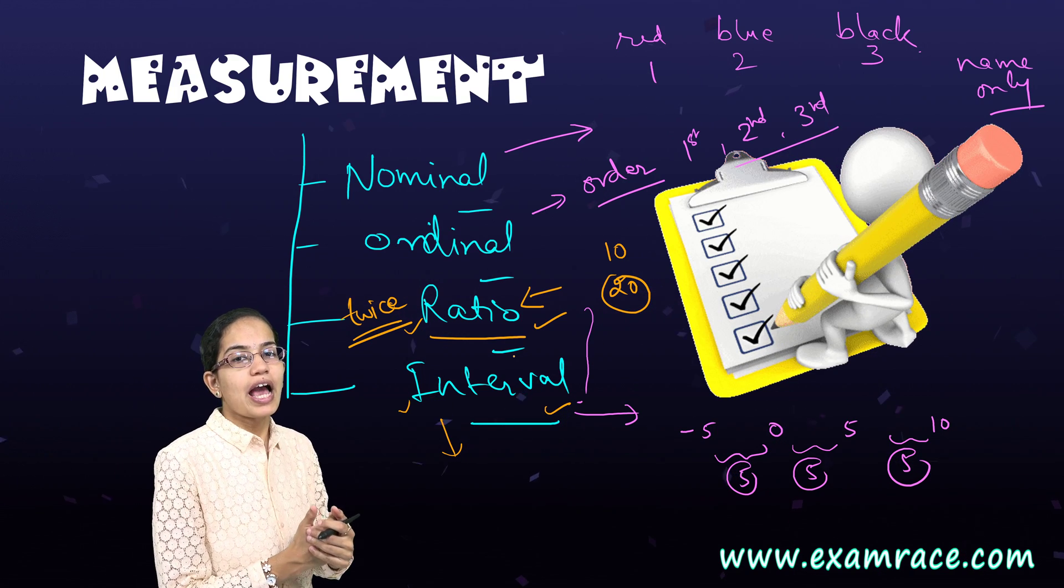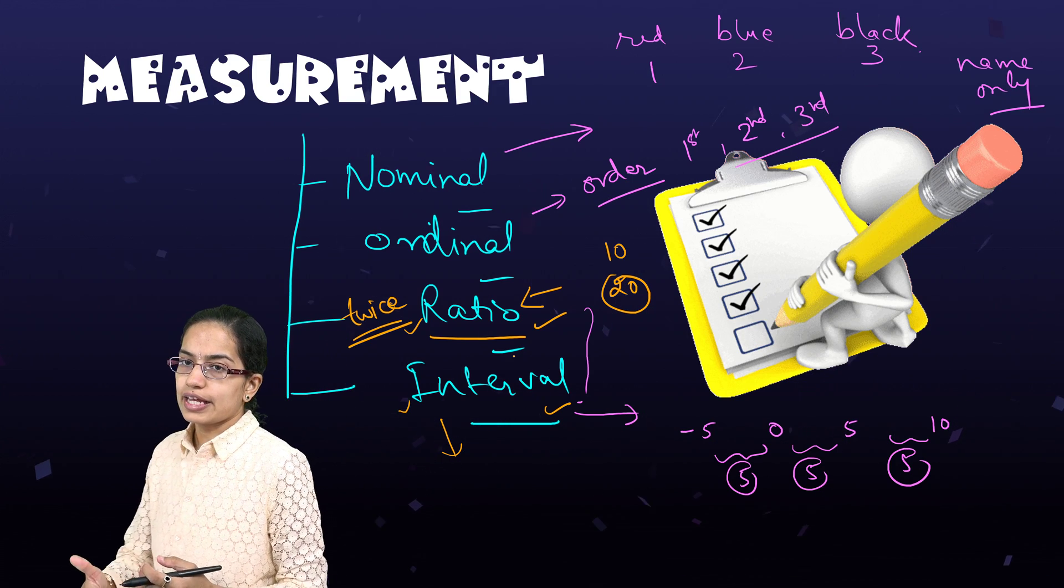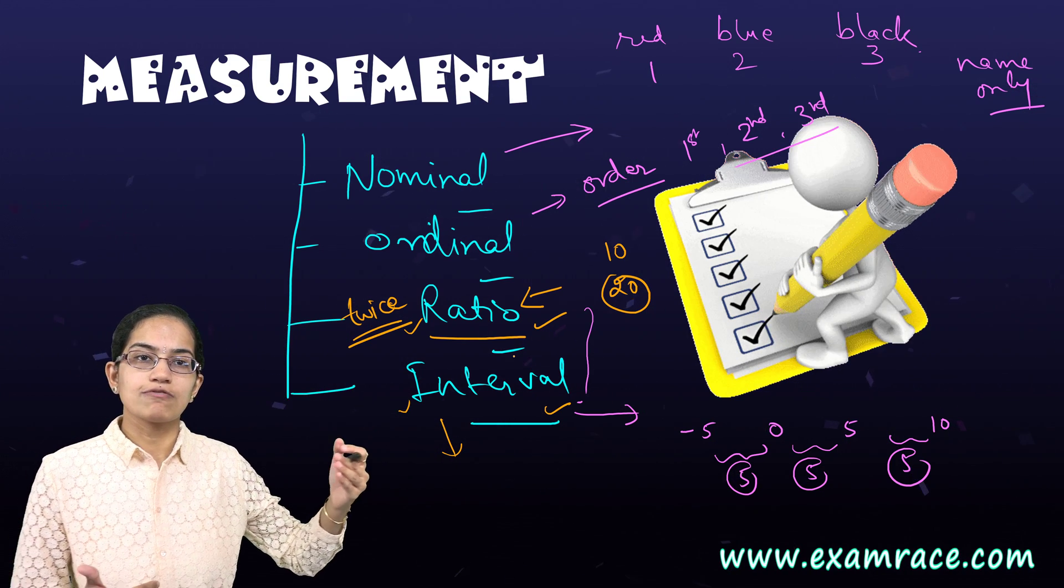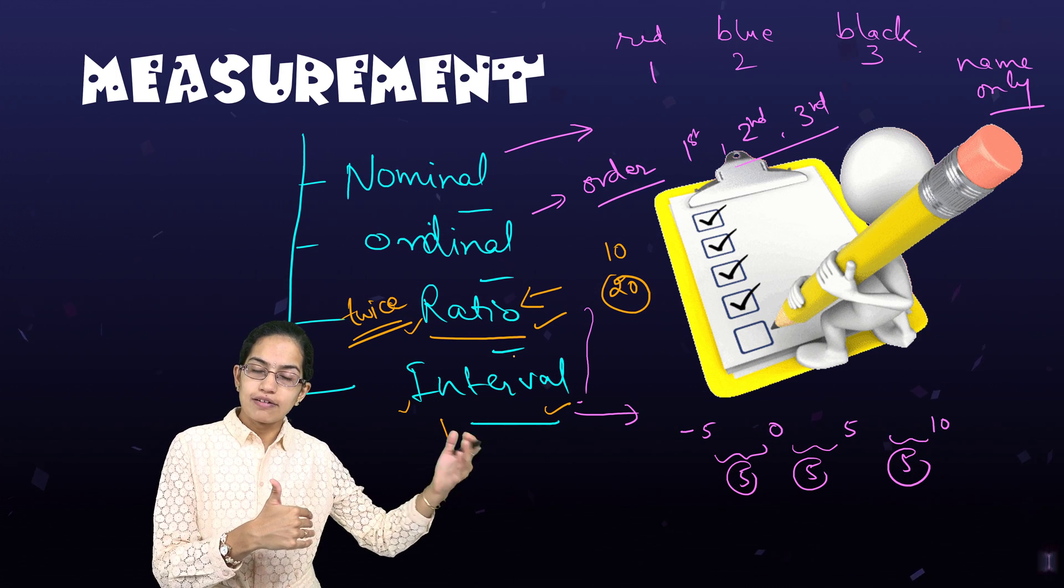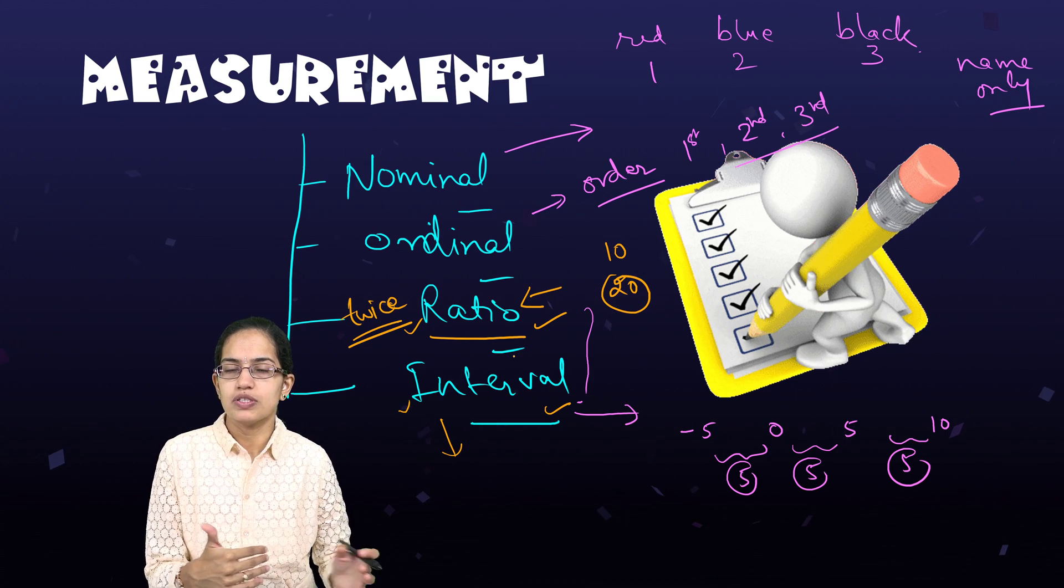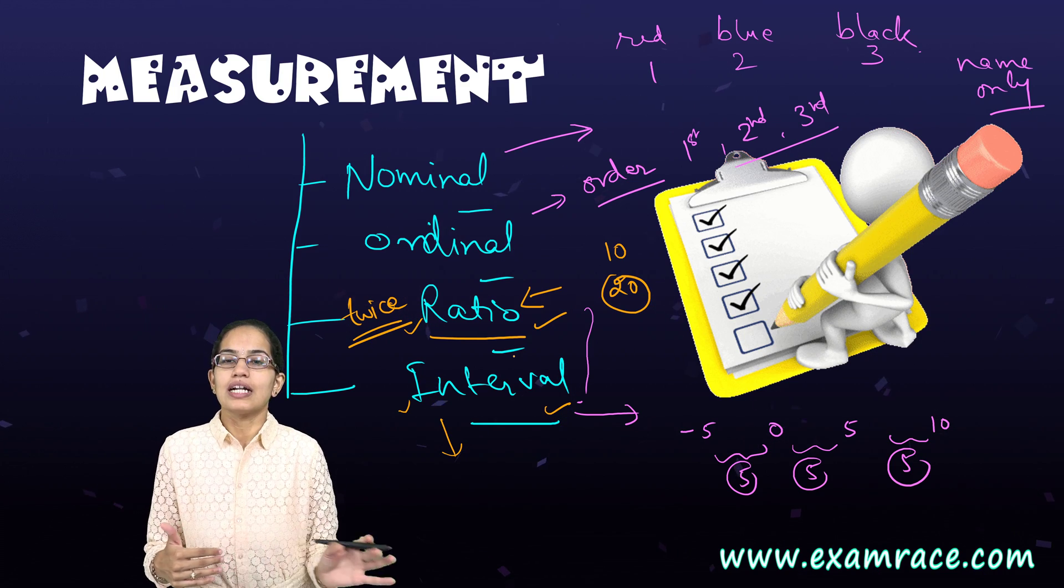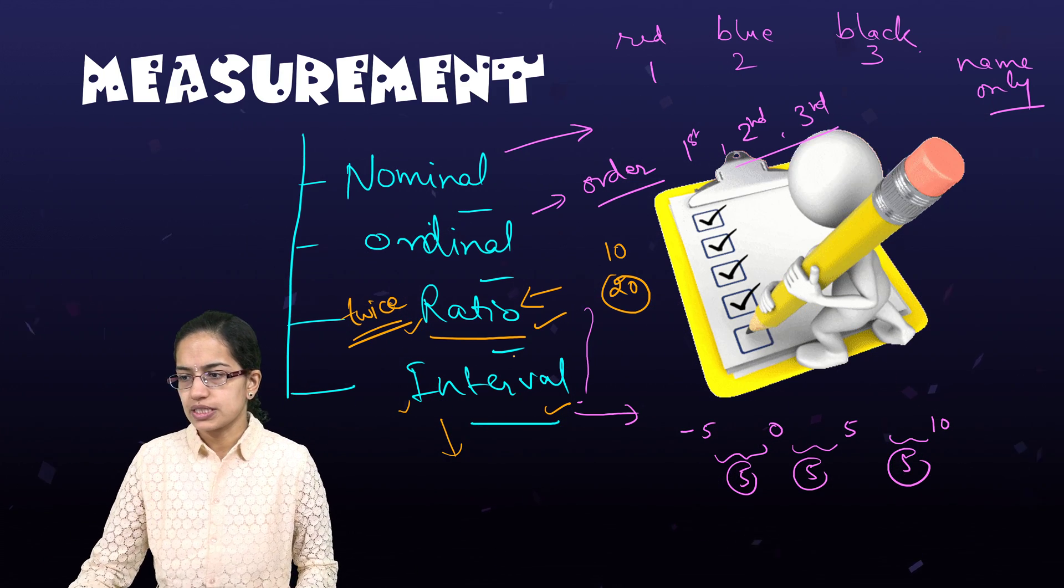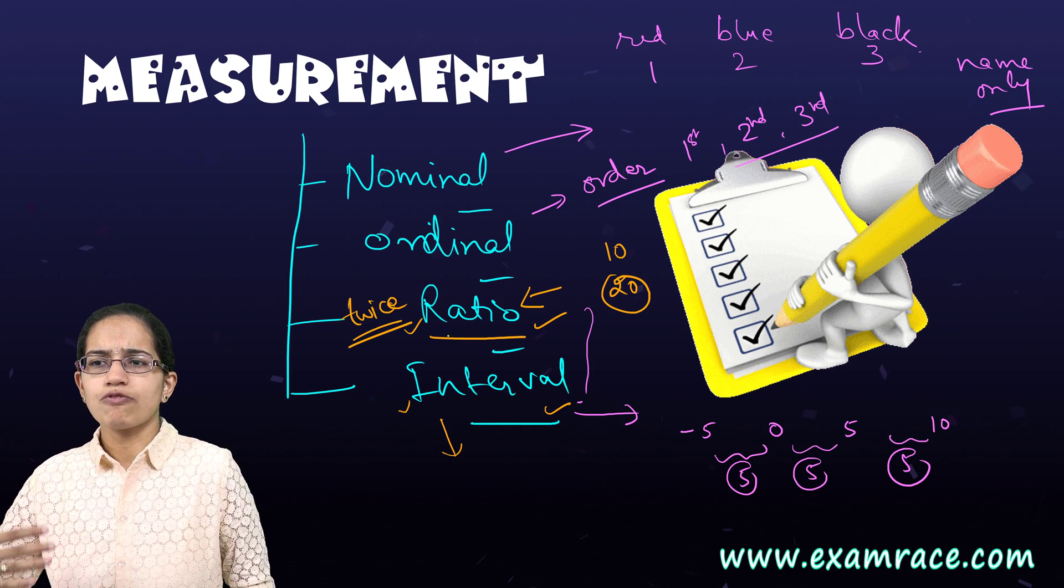Where I can say yesterday's temperature was 35, today's temperature is 36, day after tomorrow the temperature is 37. So there has been a constant interval of one degree Celsius that has been seen on a daily basis. So ratio simply means twice of, half of, one third of, three times of. So that is where we are trying to understand these measurements.